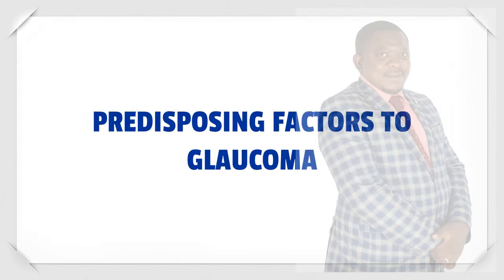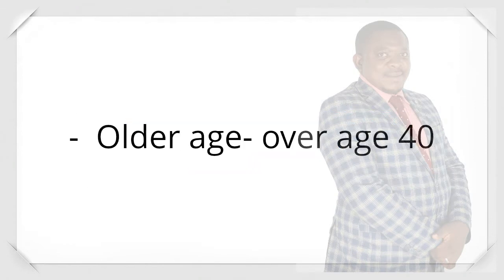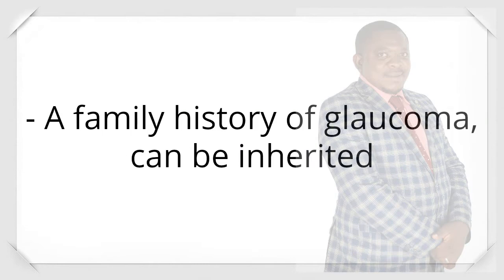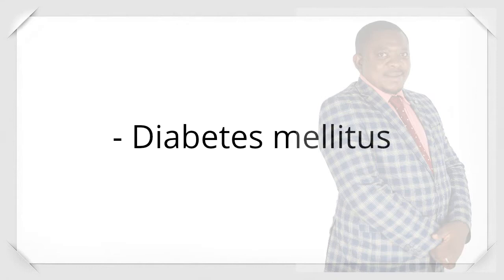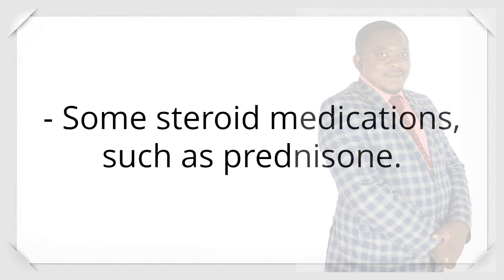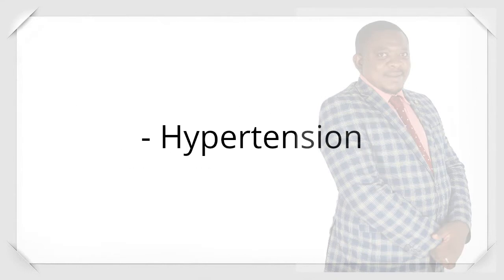Predisposing factors to glaucoma include older age — over age 40 — and a family history of glaucoma, as it can be inherited. Other factors include poor vision, diabetes mellitus, some steroid medications such as prednisone, and hypertension.